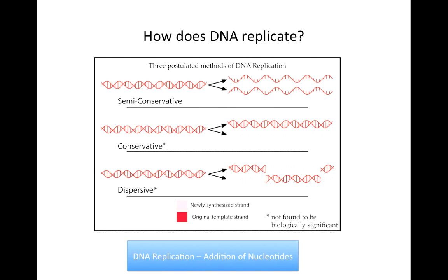There are three possibilities for the way in which DNA could replicate. The first is by semi-conservative replication. In this method, the double-stranded DNA separates into two single strands, each of which is used as a template strand to create two new double-stranded DNA molecules.